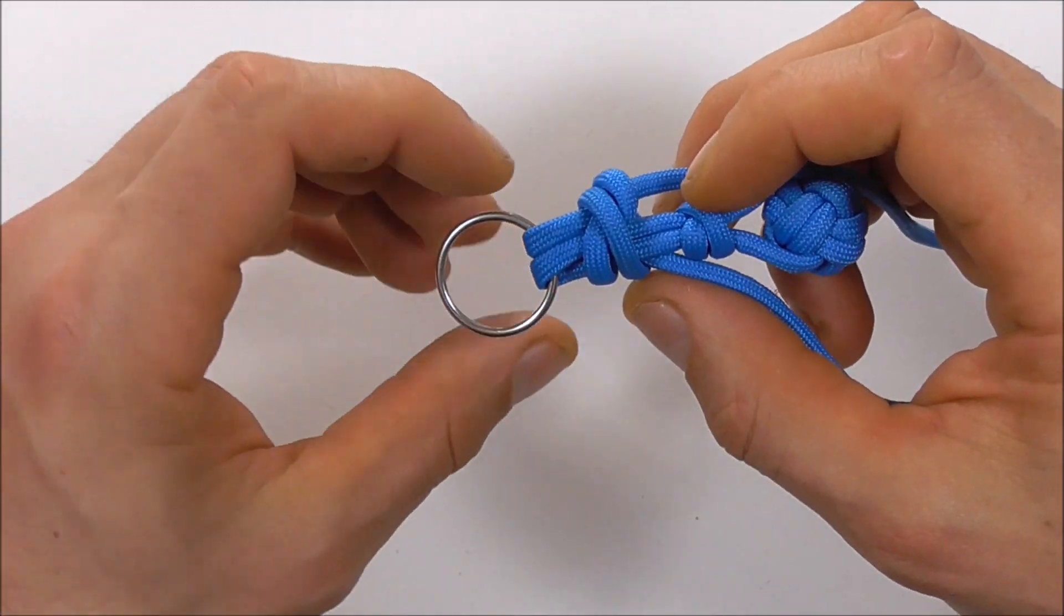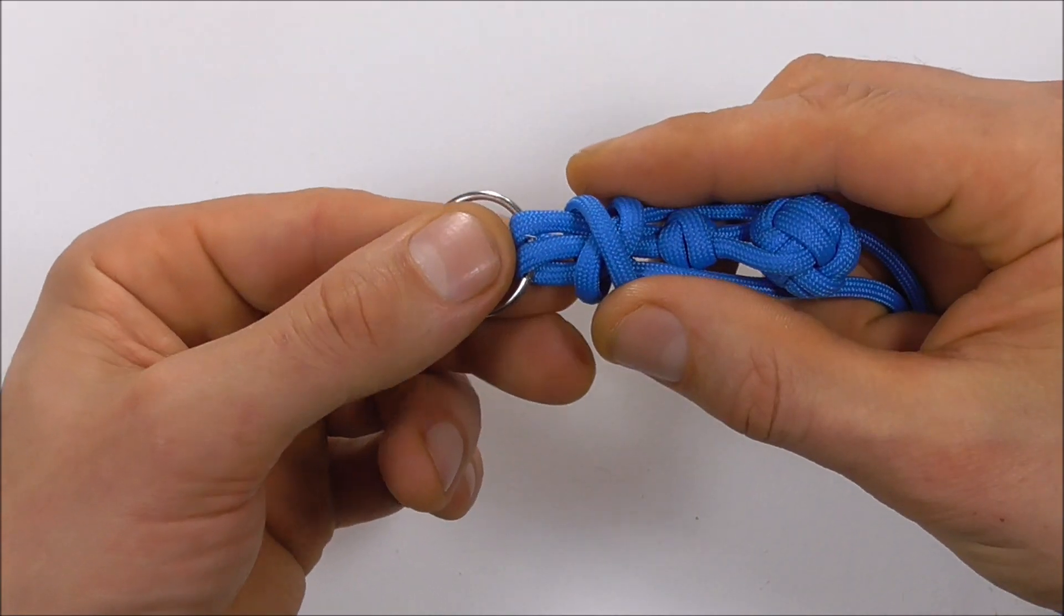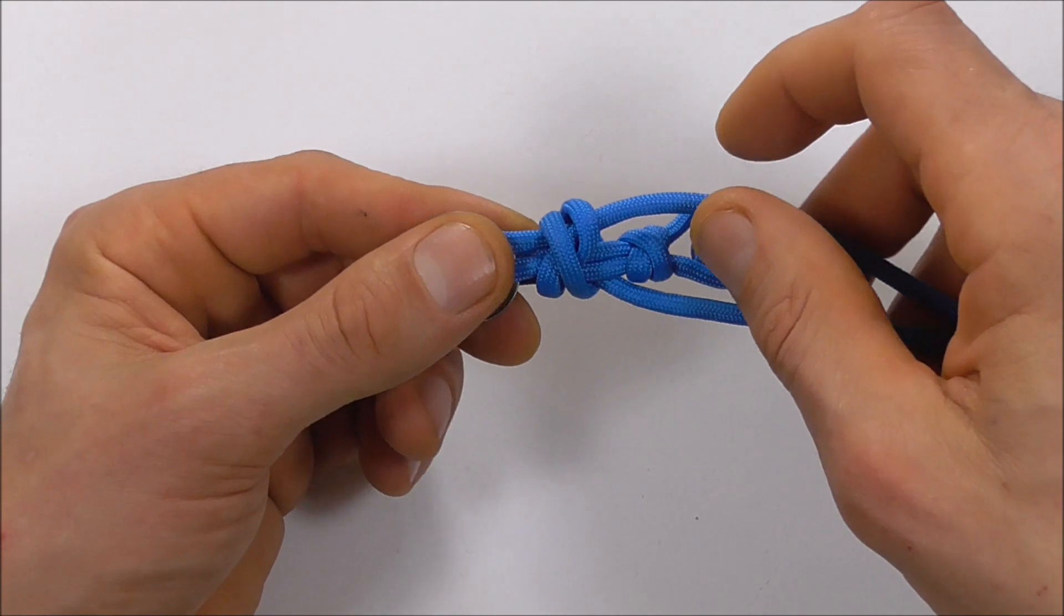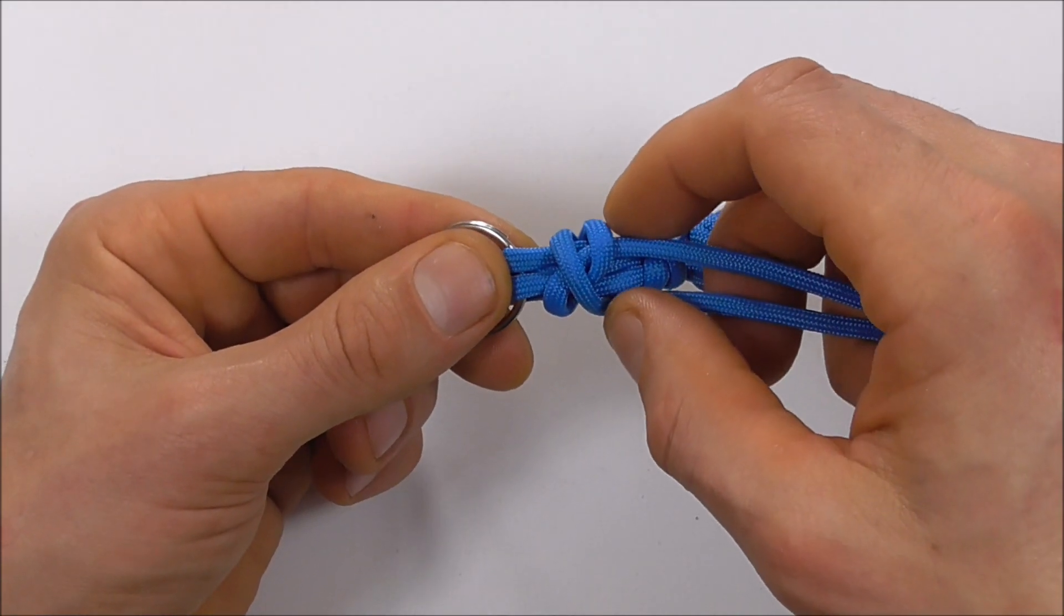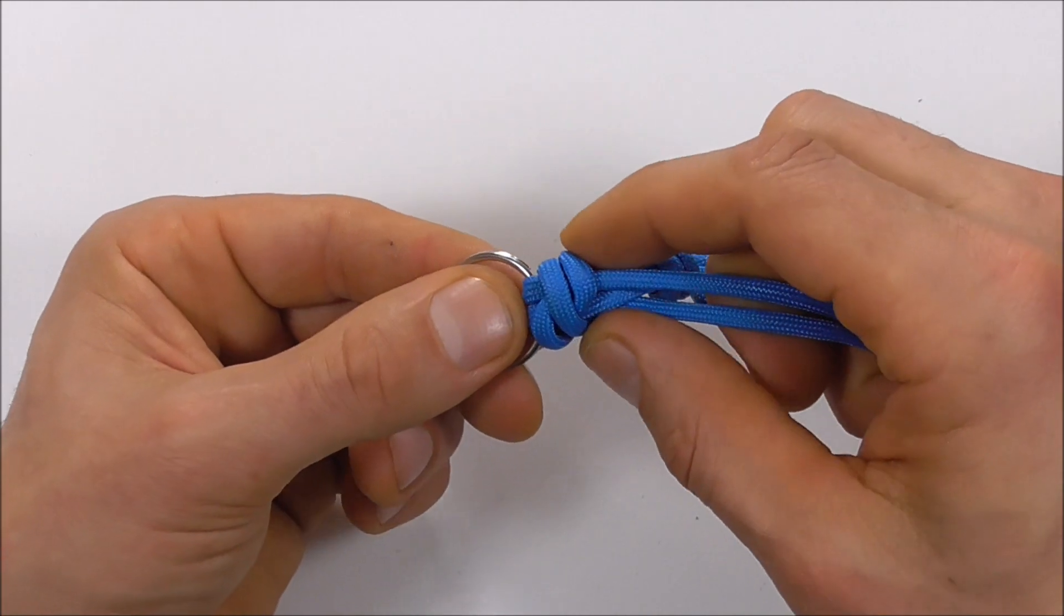You should see this X shape here, and if you turn it around, you should also have an X-type shape on the other side. We want to keep this a little bit loose and then maneuver the knot right up to the ring as you tighten.